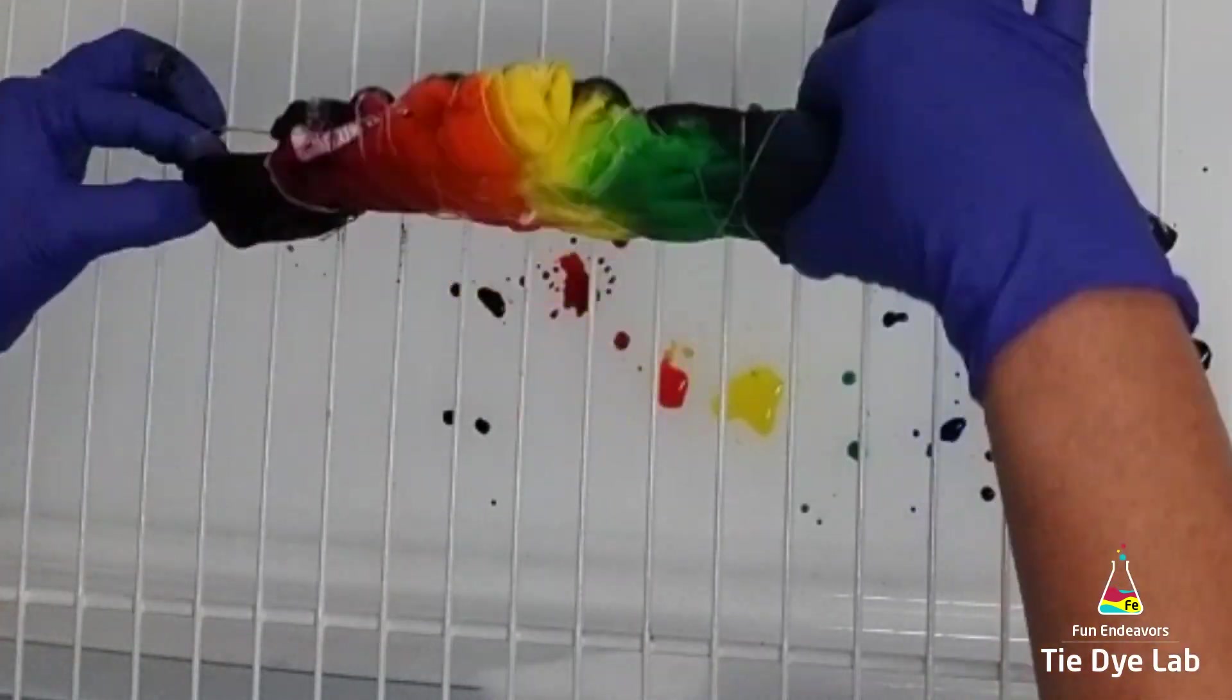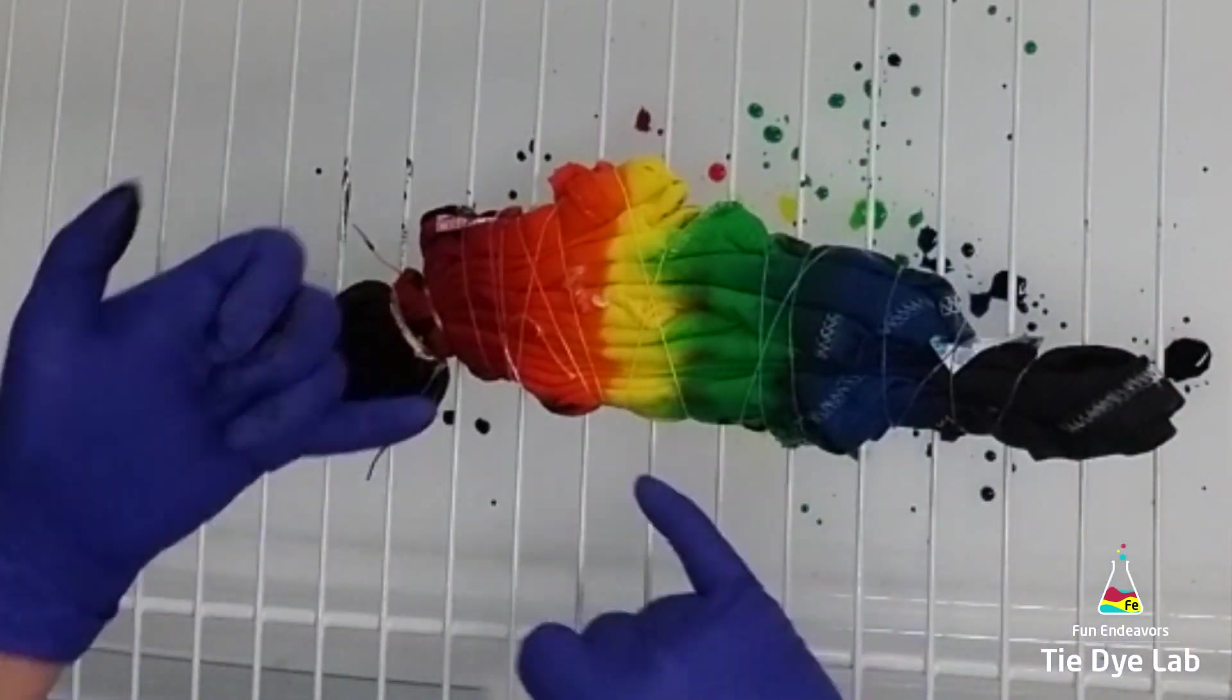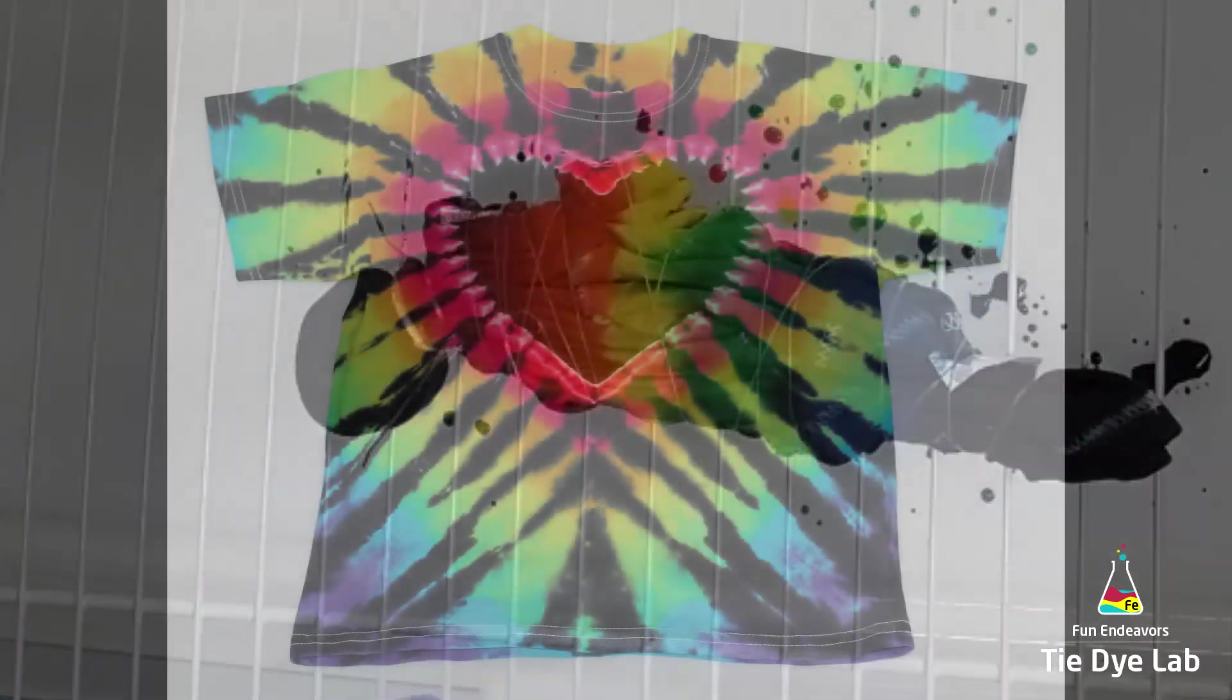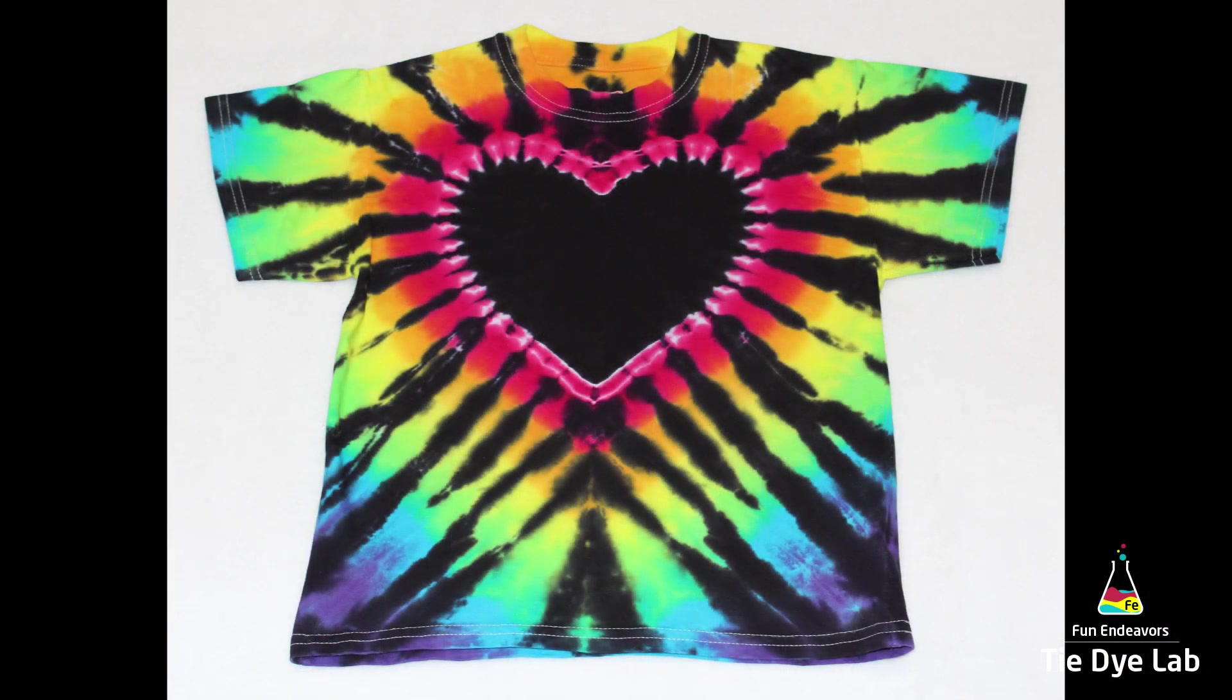Then I'm going to turn my shirt back over and let it process with the rainbow side up. I waited 24 hours before I washed it, and this is what our shirt ended up looking like.